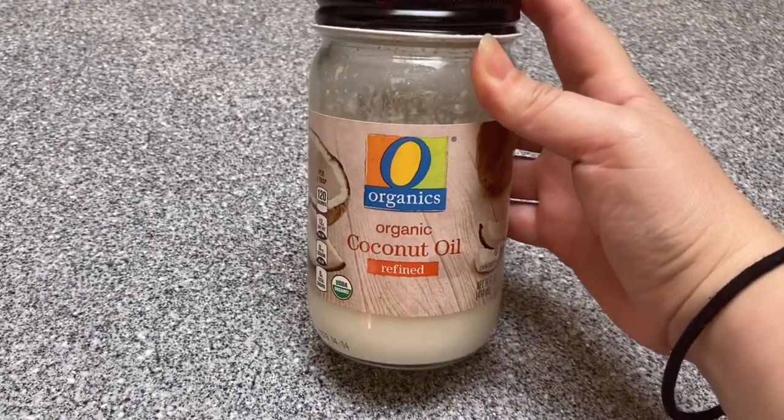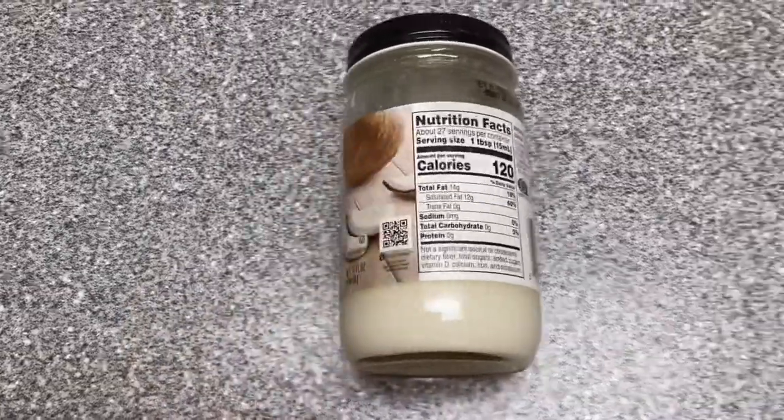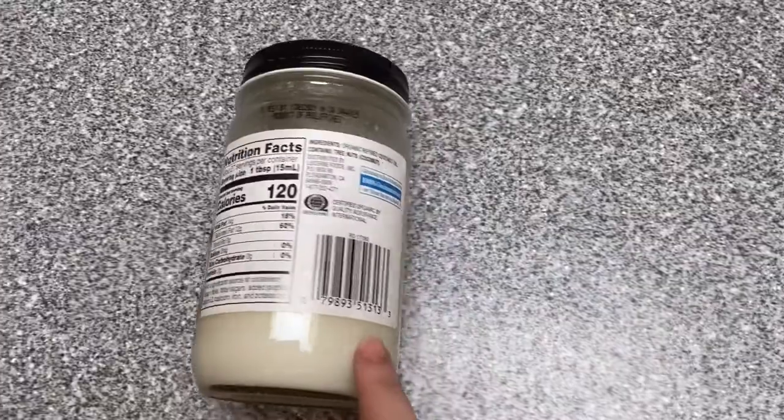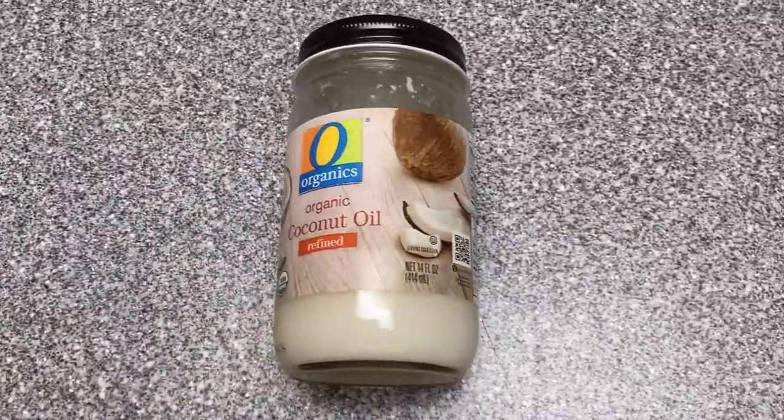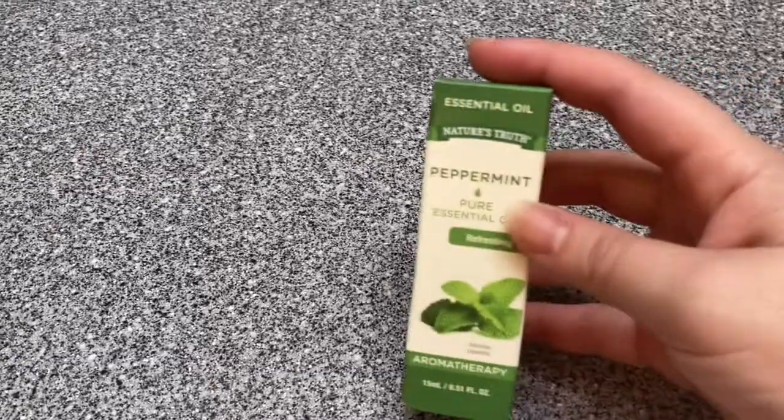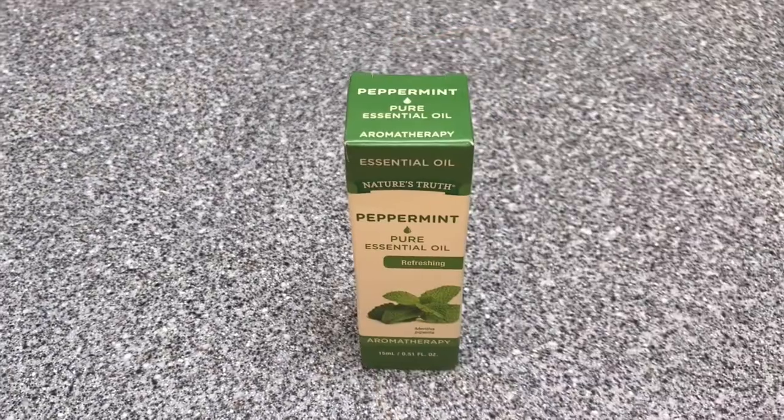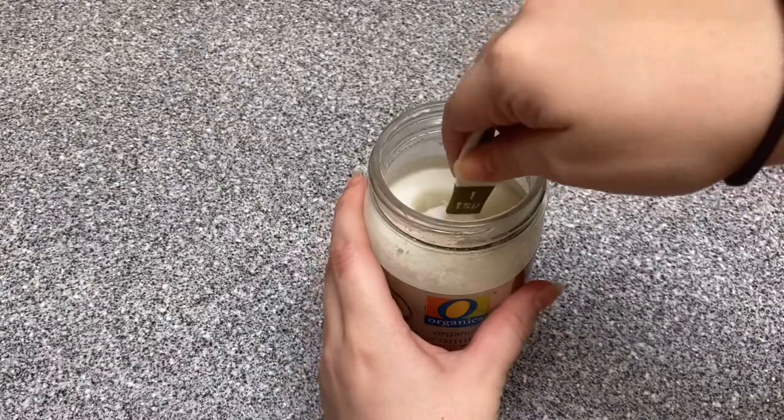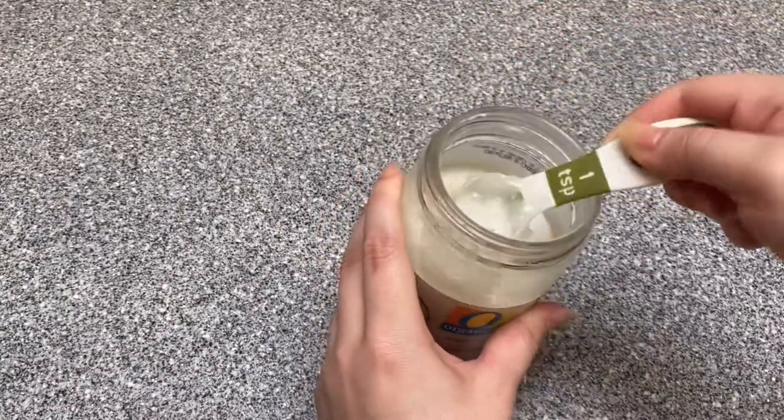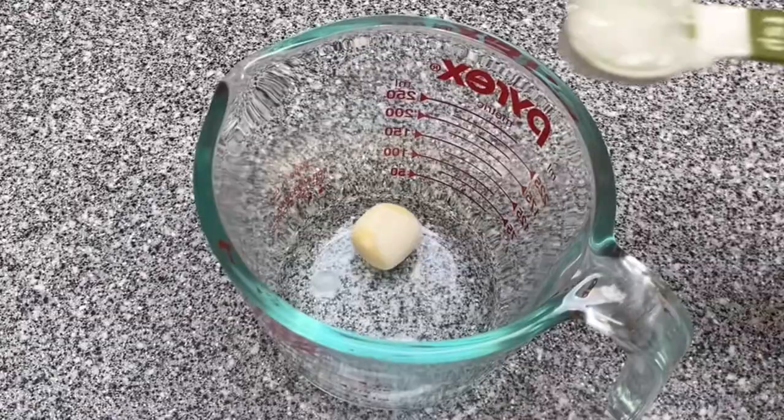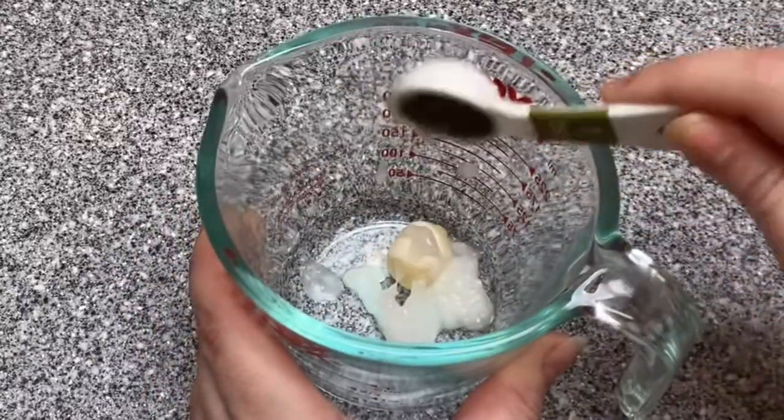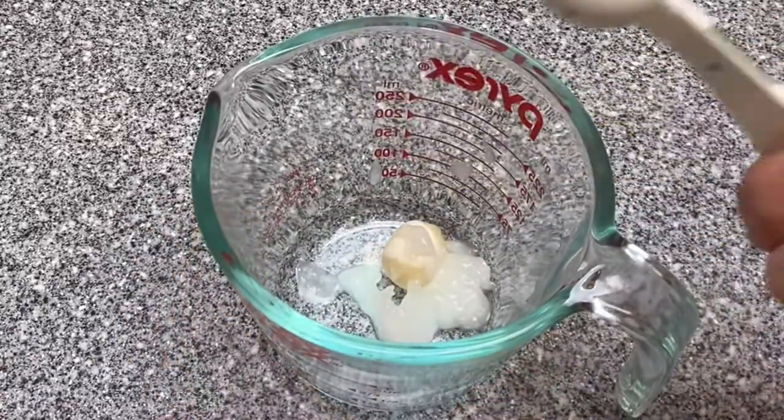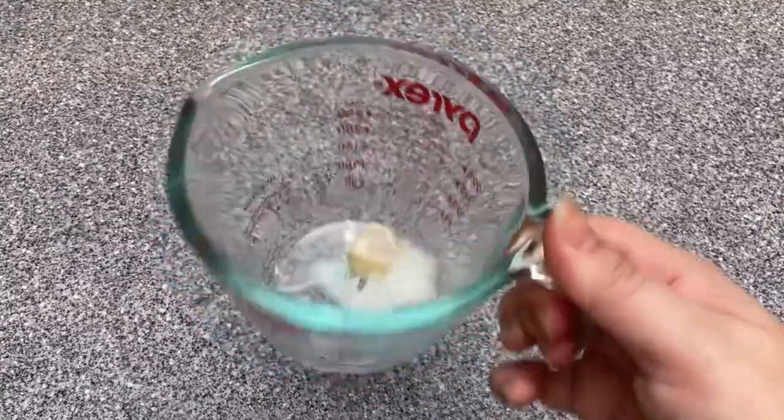According to a quick Google search, coconut oil soothes, softens, and moisturizes the lips and skin. So that's why we're adding it to this chapstick. Last ingredient is some peppermint essential oil for the smell. Now I'm just going to scoop out a teaspoon of coconut oil and add that to my teaspoon of cocoa butter. You can see it's not a whole lot there. I definitely need to double this recipe.